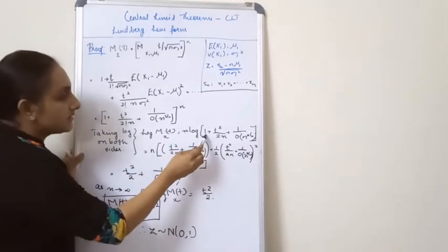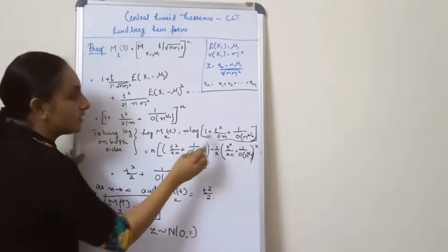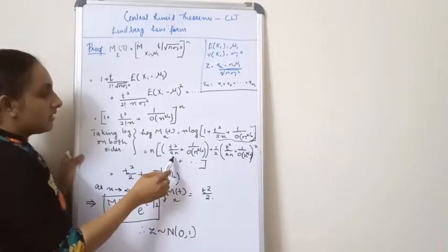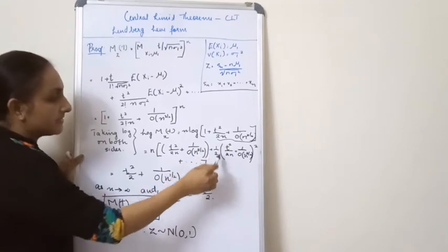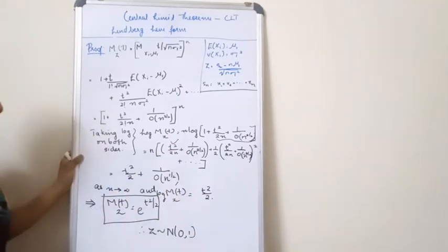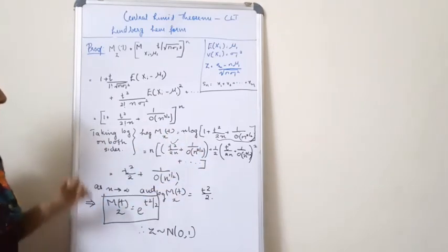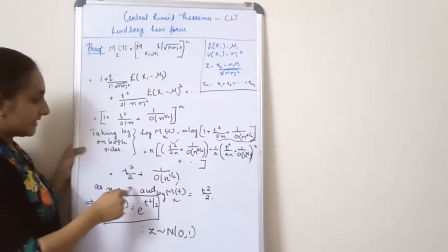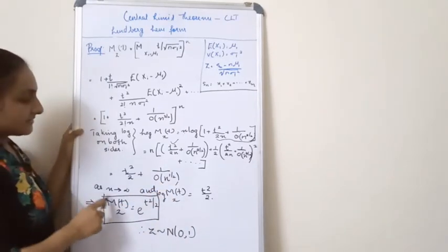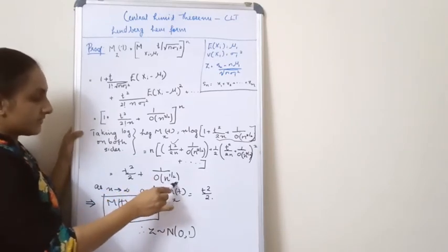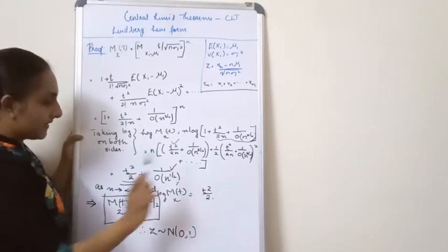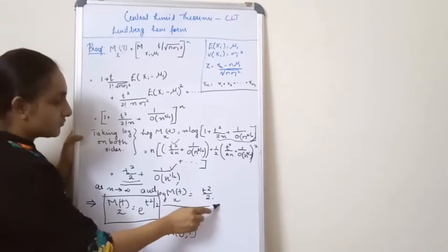There is a common term t²/(2n). Taking it outside, n and n cancel, and we finally get t²/2 plus other terms of order O(n^{-1/2}). As n tends to infinity, the second term becomes 0, and the remaining result is t²/2. So log M_t(Z) = t²/2.